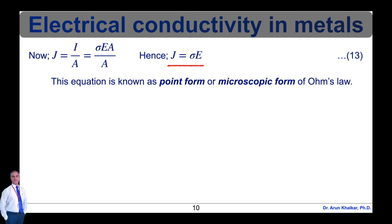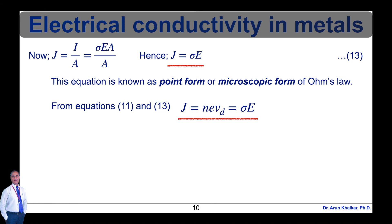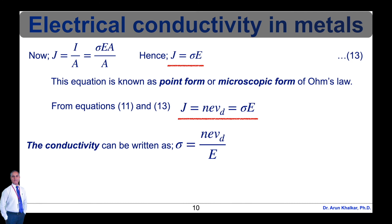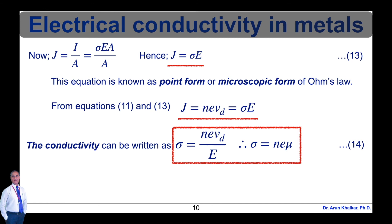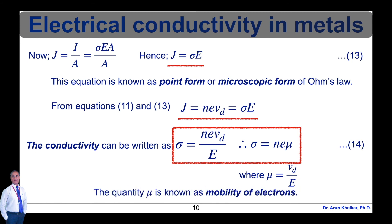Equation 13, J = σE, is known as the point form or microscopic form of Ohm's law. From equations 11 and 13, we can write J = n × e × V_D = σ × E. Therefore, conductivity σ = n × e × V_D / E = n × e × μ — equation 14. In this equation, μ = V_D / E, and the quantity μ is known as the mobility of electrons.